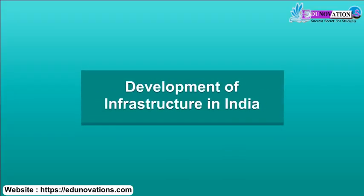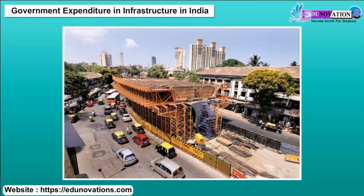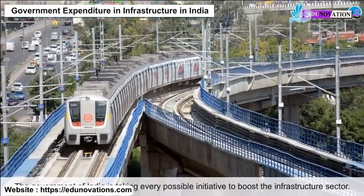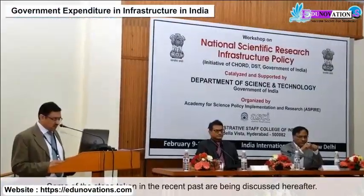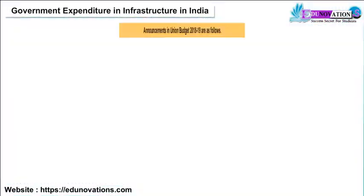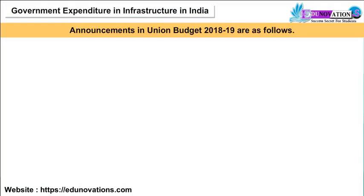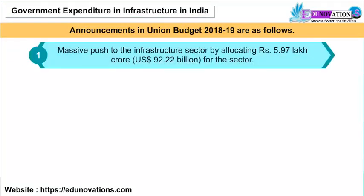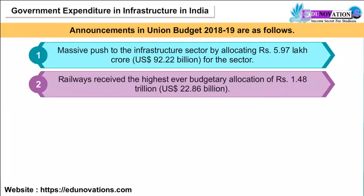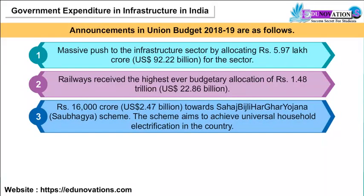Development of Infrastructure in India: The government of India is taking every possible initiative to boost the infrastructure sector. In Union Budget 2018-19, there was a massive push to the infrastructure sector by allocating Rs. 5.97 lakh crores. Railways received the highest ever budgetary allocation of Rs. 1.48 trillion. Rs. 16,000 crores were allocated towards the Sahaj Bijali Har Ghar Yojana (Saubhagya) Scheme, which aims to achieve universal household electrification in the country.